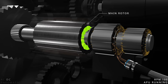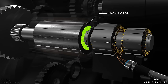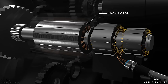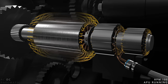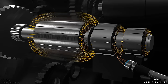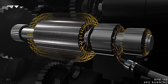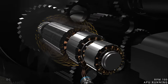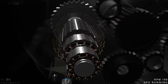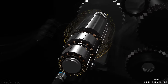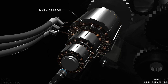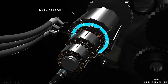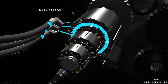The generator control unit adjusts the exciter current and varies the field strength of the main rotor to regulate the output voltage. The rotating field is cut by the main stator, and a three-phase alternating current is generated.